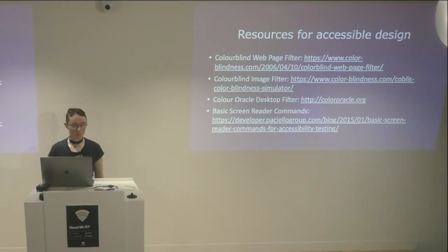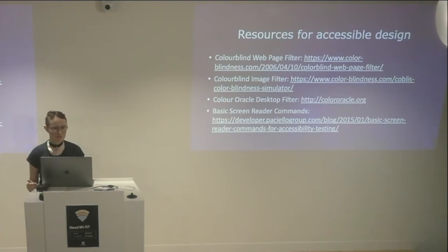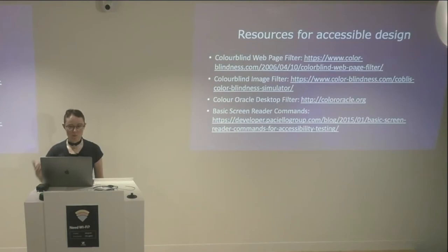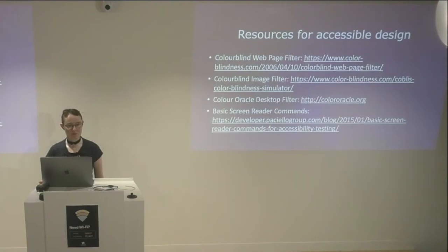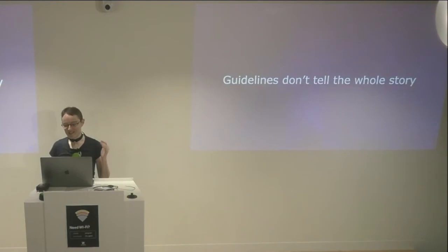For more specific examples, color blindness is one of the big ones because about 5% of the population have some form of color blindness. There's the web page filter, the image filter, and the one I really like is the Color Oracle desktop filter — software you can install on your desktop and select different types of color blindness, including blue color blindness and monochrome vision. And if you want to test how accessible your site is with a screen reader, the Paciello Group put together a list of basic screen reader commands, which will allow you to install commonly used screen readers — NVDA, JAWS, VoiceOver — and go through your website, which I absolutely recommend you do.